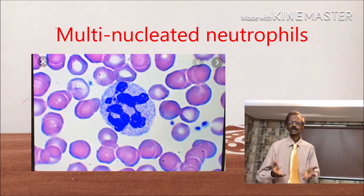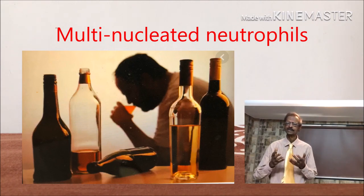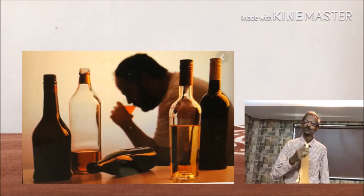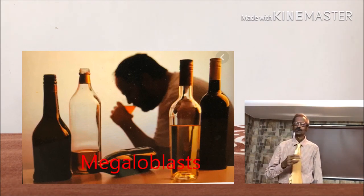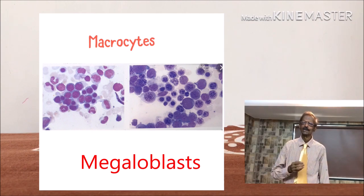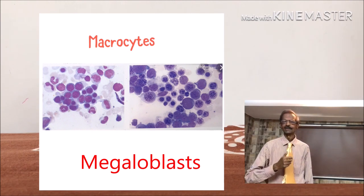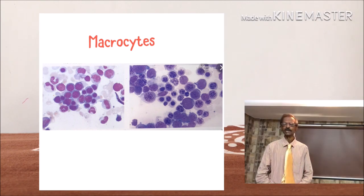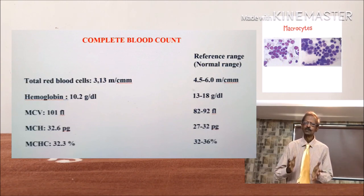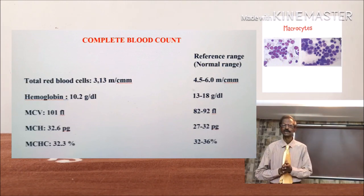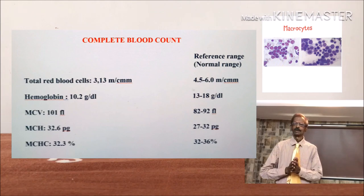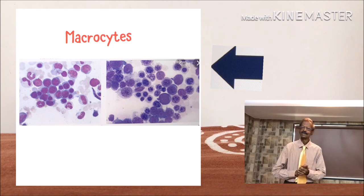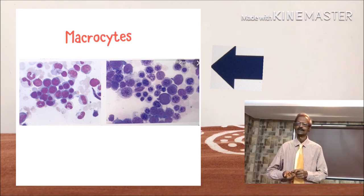Question 1: What is the diagnosis? The diagnosis is that the patient is suffering from megaloblastic anemia, since the symptoms, hemoglobin, and RBC count are very low, and MCV, MCH, and MCHC indices are highly increased. Also, in the differential count, there was presence of a large number of megaloblasts.